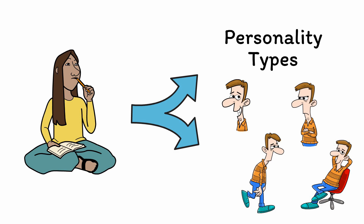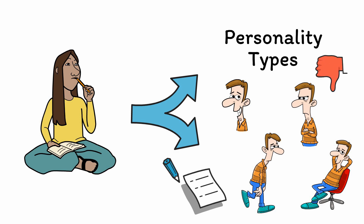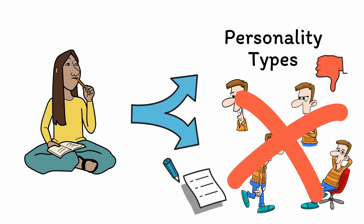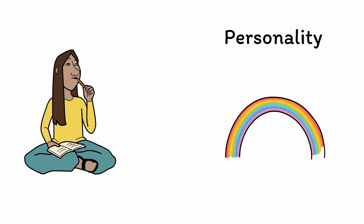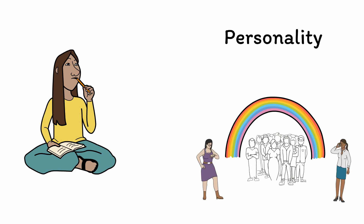More recently, the well-known Myers-Briggs Type Indicator similarly attempts to group people into 16 distinct categories. However, while these personality types seem to make sense on first glance, they actually do a pretty poor job of accurately describing someone's behavior, thoughts, and emotions in the long run. This is because personalities are not distinct buckets that people either fit into or not.